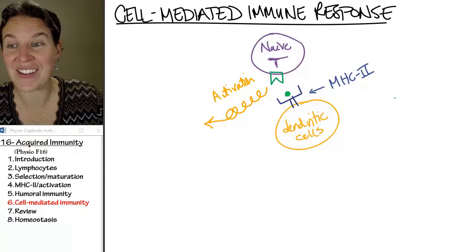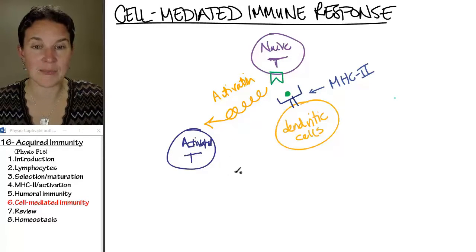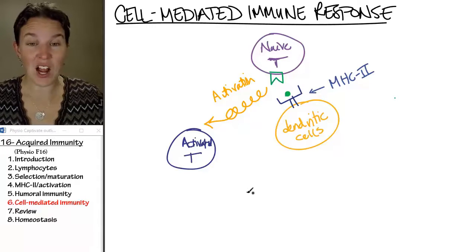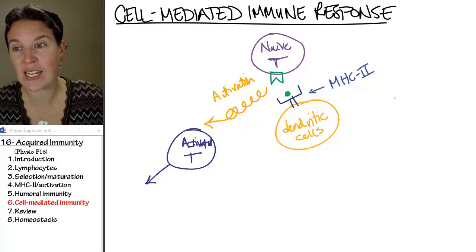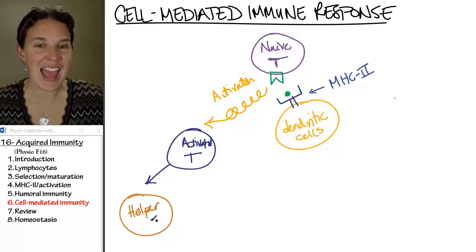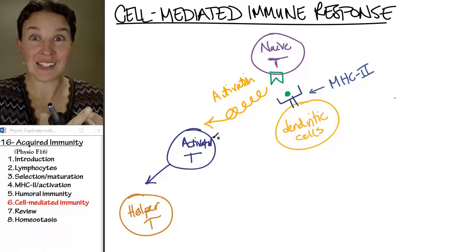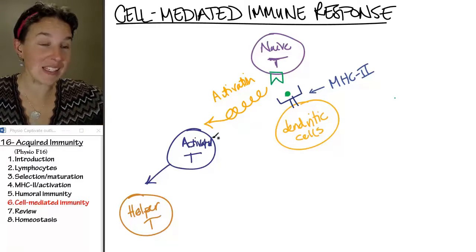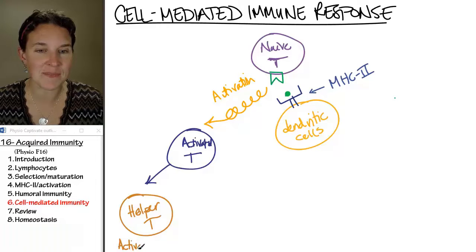Once we have an activated T cell — activated T cells, just like B cells, are going to differentiate. One of the things, and you already know this, one of the things that we can differentiate into is helper T's. And helper T's have the ability to bind to MHC2 on B lymphocytes and activate them. So helper T's are going to activate B cells.